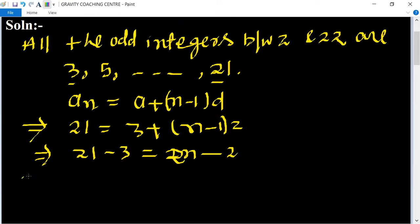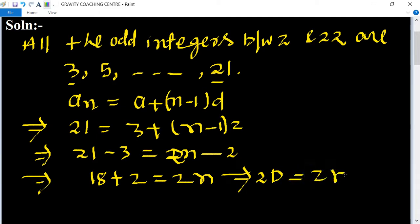So this implies that 18 + 2 = 2n, which means 20 = 2n. Therefore 20/2 = 10, so n = 10.